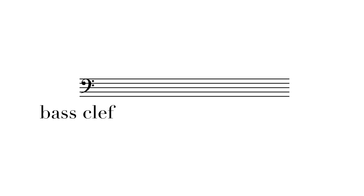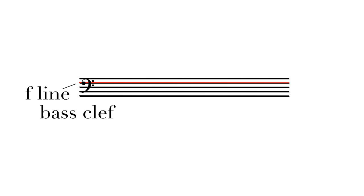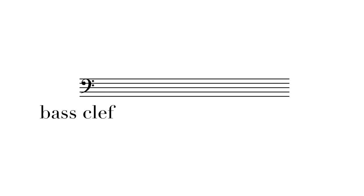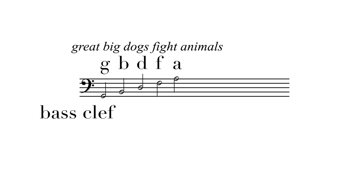The only F clef used in modern music commonly is the bass clef. Much like the G clef, the F clef indicates where the F line is on the staff. The two dots in the clef go on either side of the F line. The lines for this clef are G, B, D, F, and A — or "great big dogs fight animals." However, a lot of people remember it by "good boys do fine always."